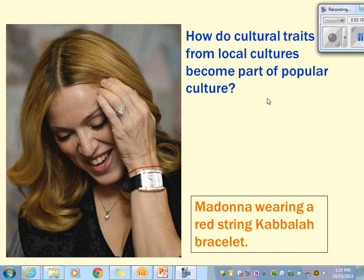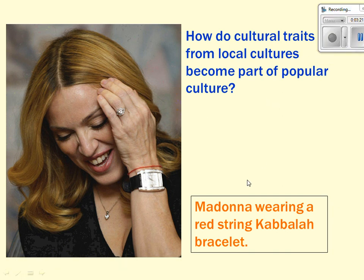One of the questions the chapter discusses is how culture traits from local cultures become part of pop culture. The example in the book is the Kabbalah bracelet — Kabbalah is a sect of Judaism. Madonna wore it during a performance or interview, it was seen by pop culture and began to take off. It kind of lost its meaning but was still part of a local culture put into pop culture. Celebrities, iconic figures, multinational corporations, or even communication between groups during an occupation or war can spread local culture traits into pop culture.